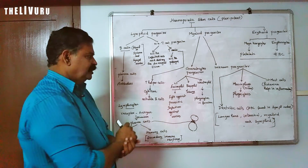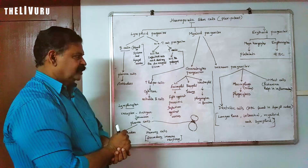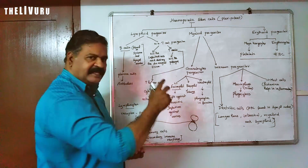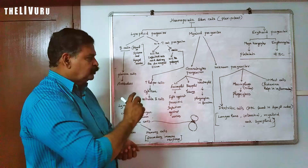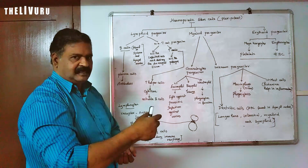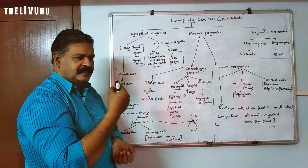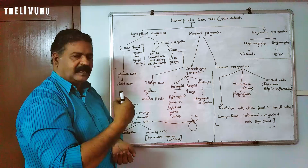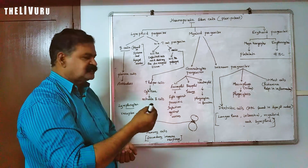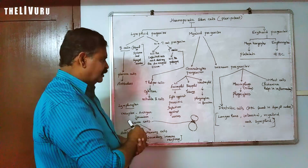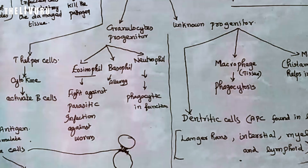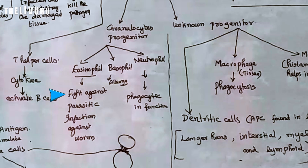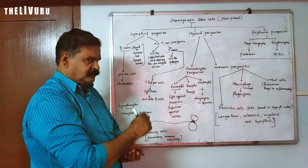Eosinophil is very important. Eosinophil and Basophil are involved in allergy responses. They fight against parasitic infections, for example against worms. That is why Eosinophil is significant in parasitic and allergic conditions.